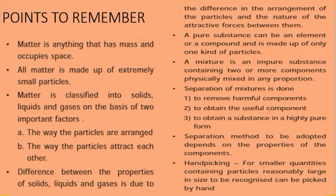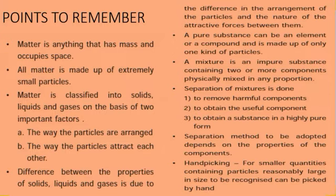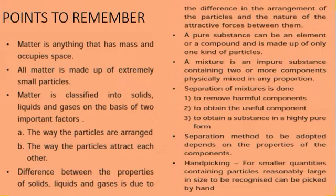Points to remember: Matter is anything that has mass and occupies space. All matter is made up of extremely small particles called atoms. Matter is classified into solids, liquids, and gases based on the way particles are arranged and the way particles attract each other. The difference in properties of solids, liquids, and gases is due to the difference in arrangement of particles and the nature of attractive forces between them. A pure substance can be an element or a compound made up of only one kind of particle. A mixture is an impure substance containing two or more components physically mixed in any proportion.